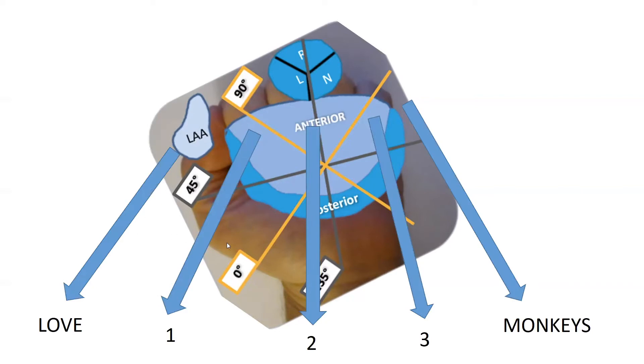A way to be able to memorize this is that our left atrial appendage is the most lateral aspect. And the mnemonic is love, 1, 2, 3, monkeys.